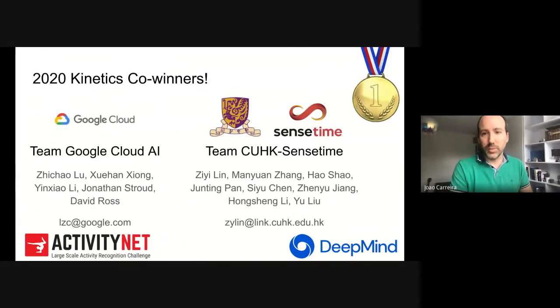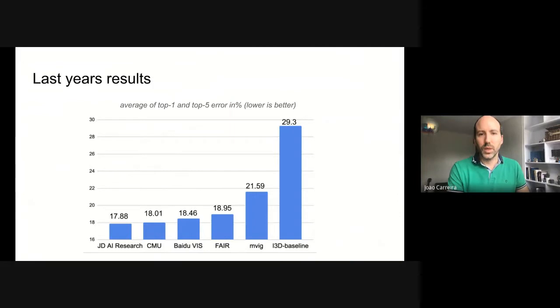And for first place, we had two teams with very similar scores. A team from Google Cloud, led by Zixiao Lu, and the team combining researchers from the Chinese University of Hong Kong and SenseTime, led by Zilin. We will hear talks from both of these teams later on in this session. Many congratulations to both teams, and I'm really disappointed I can't deliver their prizes personally this year. Let me first show last year's results, where JD AI Research took first place with a score of approximately 17.9 average of top 1 and top 5 error. This is much better than the simple i3d baseline that gets 29.3.